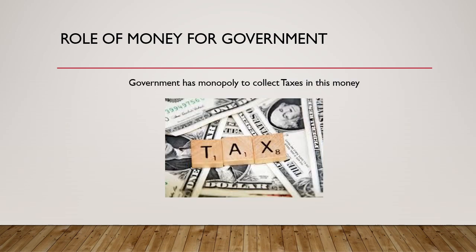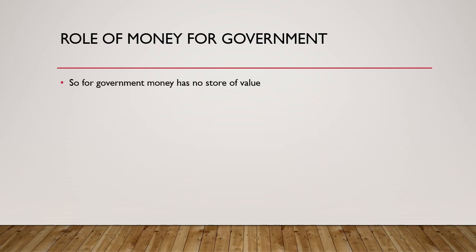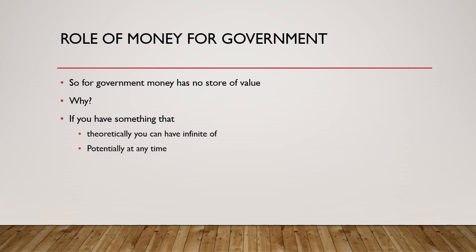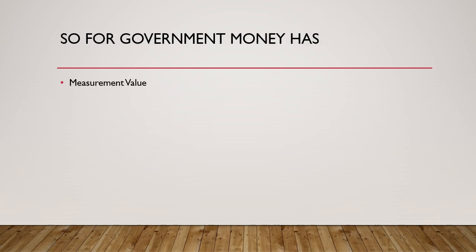The government also has a monopoly over tax collection, which gives it control over money supply in the economy. For the government, unlike for us, money has no store of value — because if you theoretically can have an infinite amount of something, it would be of no store of value to you. For the government, money is a measurement of value, like a scale used to measure its wealth, accounting, and taxes.